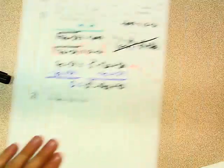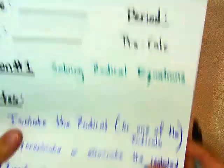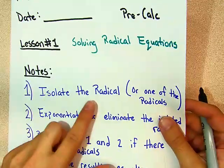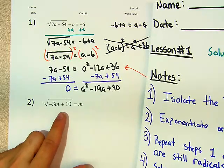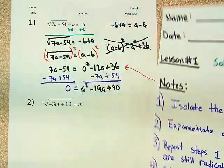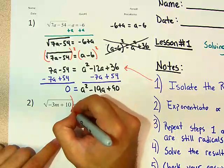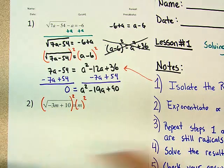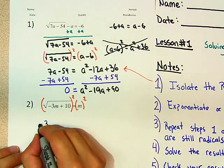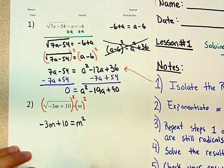If you have any confusions on what is happening in this algebra, you need to let me know. Let's do the next question. Question number 2. Here, what do we do? We follow our steps. What's the first move? Isolate the radical. Is the radical isolated? Yes, it's isolated. So now what do we do? We exponentiate to eliminate both sides. So here, we're going to square both sides. And what do we get? This cancels the radical. So I have negative 3m plus 10 equals m squared.